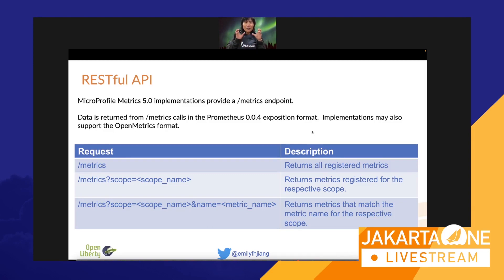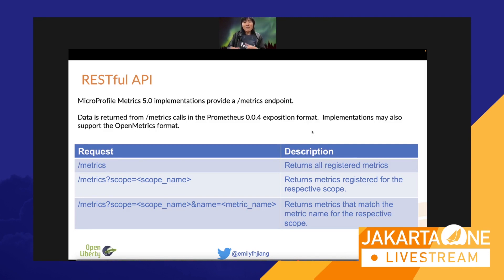You can even go to more detail — you can say what the metric name is: /metrics?scope=<scope>&name=<metric_name> to get that particular metric matching the query.